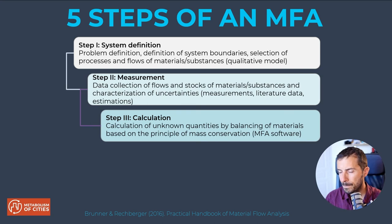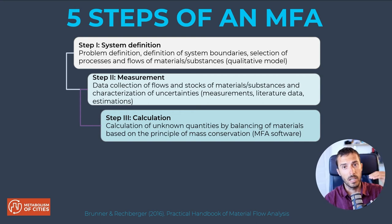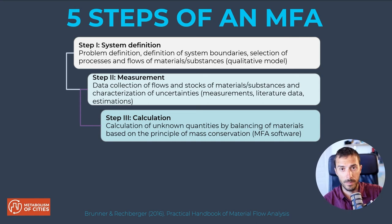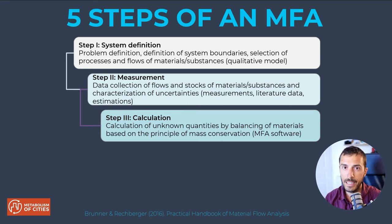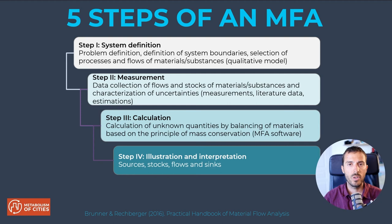There are many ways to handle unknowns. You can use mass conservation equations — for example, using the method of Baccini and Brunner from the Material Flow Analysis handbook, which provides equations you can resolve to find unknown quantities. Alternatively, you can downscale information from another spatial scale, or estimate from a smaller scale and aggregate up. Steps two and three work together: first look for data, then fill the data gaps.